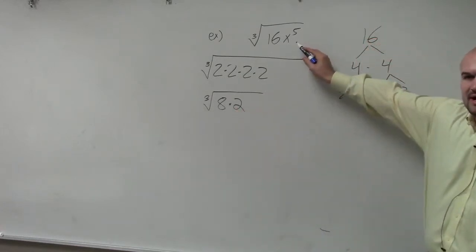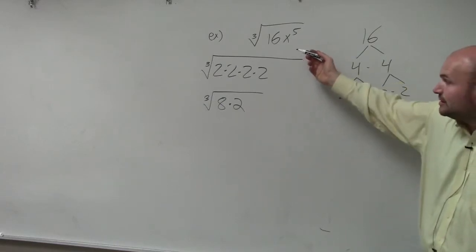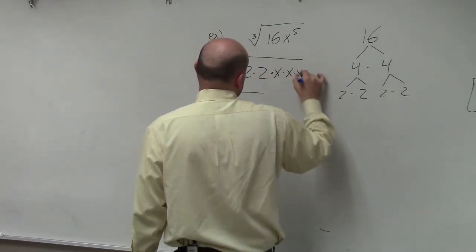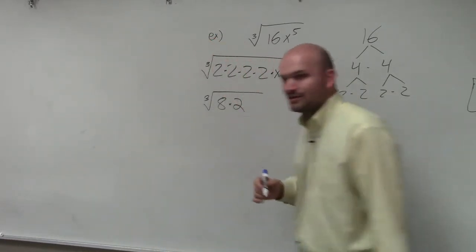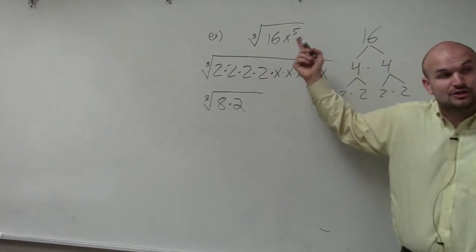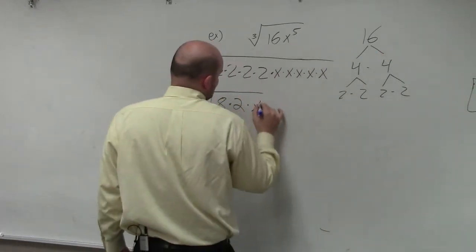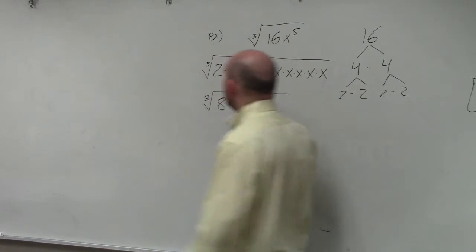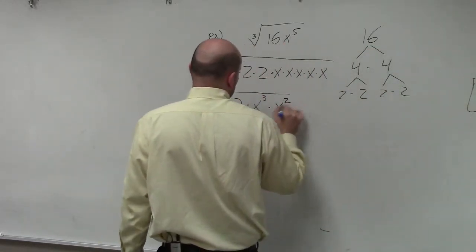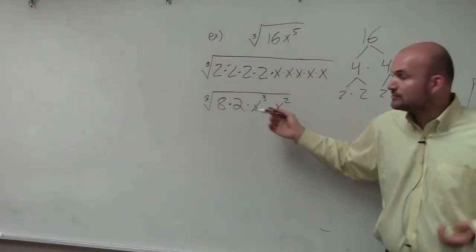And the same thing — I'm not going to rewrite x to the fifth power as x times x times x times x times x, though you could. The other way: you can only take the cube root of x to the 3rd power. So if I write this as x to the third times x squared — x cubed times x squared gives x to the fifth. There are two ways: factorization, or the product rule.